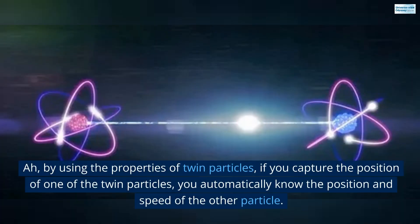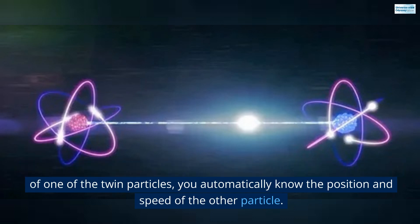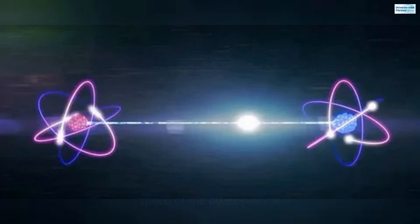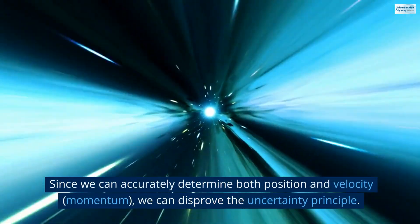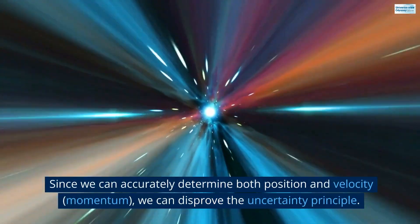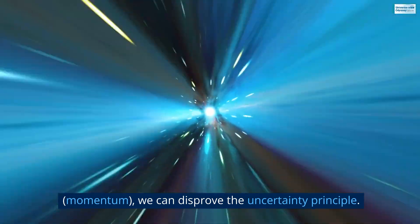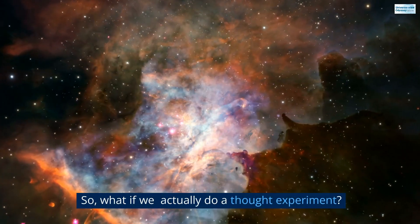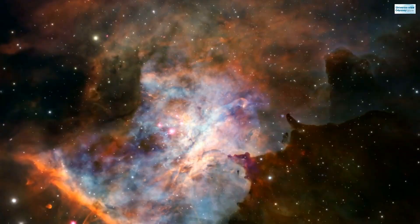By using the properties of twin particles, if you capture the position of one of the twin particles, you automatically know the position and speed of the other particle. Since we can accurately determine both position and velocity, momentum, we can disprove the uncertainty principle. So, what if we actually do a thought experiment? That's right. We could do an experiment.